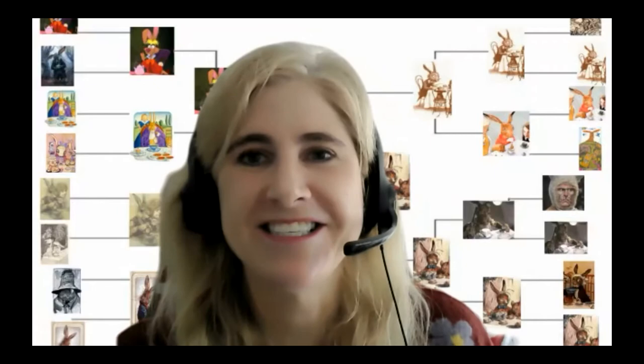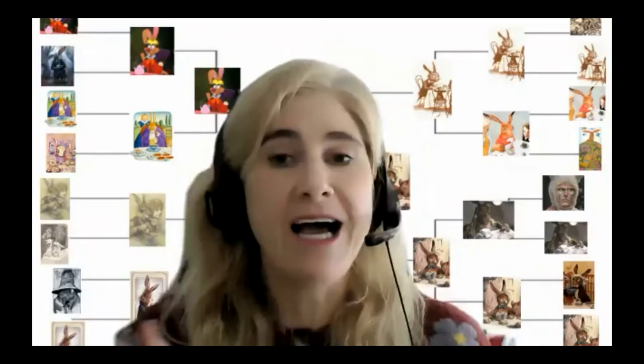If you're looking behind me, this is my idea of data visualization — a March Madness bracket I did last year for my website, Alice is Everywhere. I had people on Instagram and Facebook vote on their favorite March Hares, and I think we knew it was going to come down to 1951 Disney and John Tenniel. I was really curious to see how the early rounds went.